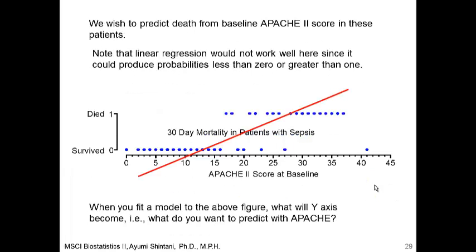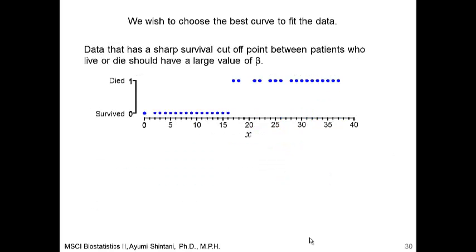Let's see what happens if you fit linear regression with this data. Linear regression would not work well since it could produce predicted values that go beyond 1 and go below 0. Since patients who survived are coded 0 and patients who died are coded 1, those values do not make any sense. Instead, we are going to fit a curve which is nonlinear, so that it does not go beyond 1 and does not go below 0.